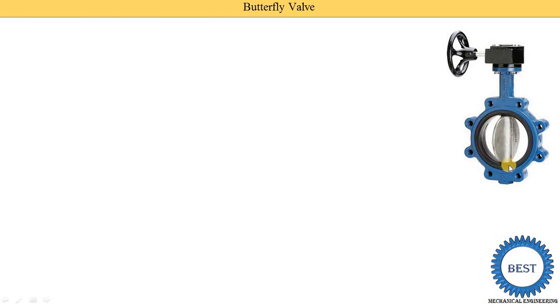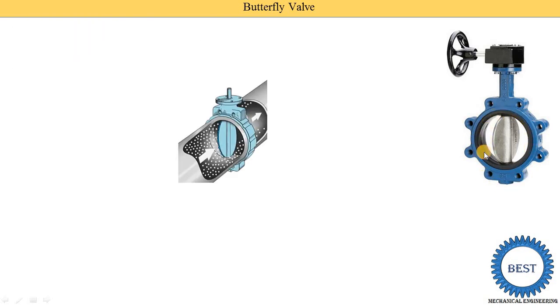This black color portion is the seal. Why this seal is used? When the valve is closed, at that time there is a possibility of the leakage. To avoid the leakage, here the seal is provided between the body and the disc. And this outer blue color portion is called as the body of the butterfly valves.